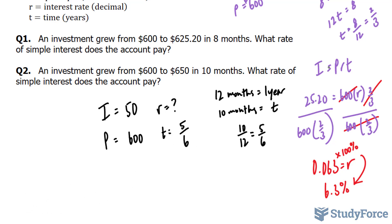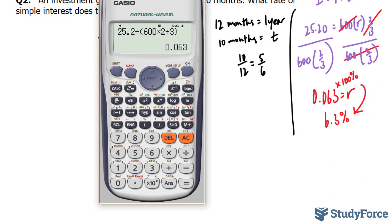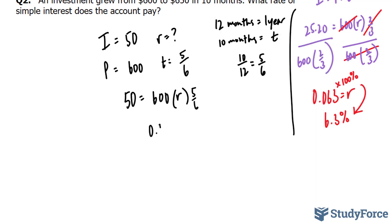I'm going to plug all of this into my formula as I did before. I end up with i = 50, p = 600, r is what I'm looking for, and t = 5/6. Plug this into your calculator: 50 divided by the product of 600 times 5/6 gives us an interest rate of 0.1. Multiplying by 100 gives us 10%.